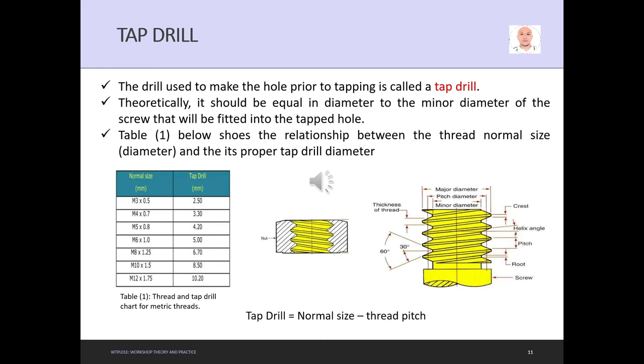The formula for tap drill is: tap drill equals normal size minus the thread pitch. For example, M5 by 0.8: 5 minus 0.8 equals 4.2, so we use a 4.2mm tap drill. For M6 with 1mm pitch: 6 minus 1 equals 5, so we use a 5mm tap drill.